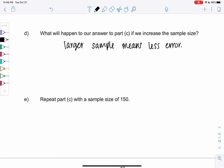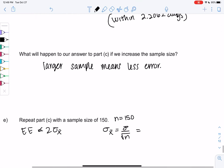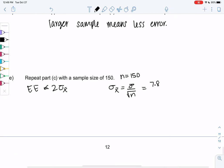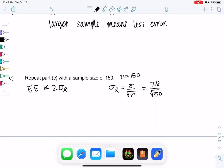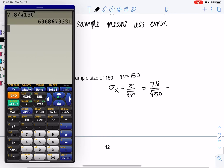We'll find the expected error. Our n is now 150. Expected error is two standard deviations, so let's find σ_x̄. It will be the original σ over square root n, so the original σ was 7.8 over square root 150, which is 0.6368, and we'll round up to 7.